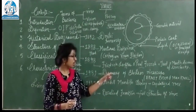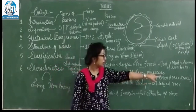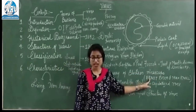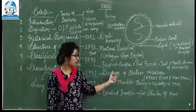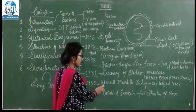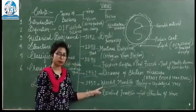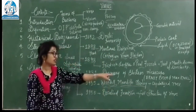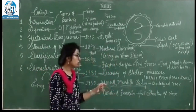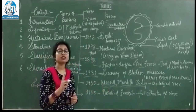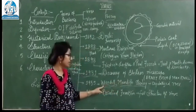After the discovery, in the year 1931, Ernest Ruska and Max Knoll — they were German engineers — invented the electron microscope. After that, Wendell Meredith Stanley, an American virologist and biochemist, crystallized the structure of TMV — Tobacco Mosaic Virus. The Tobacco Mosaic Virus was the first virus to be crystallized by Stanley.